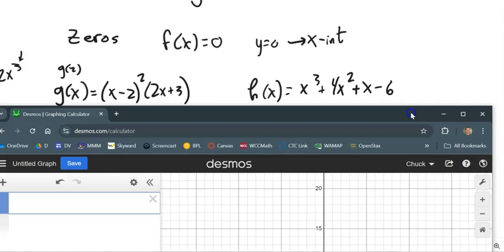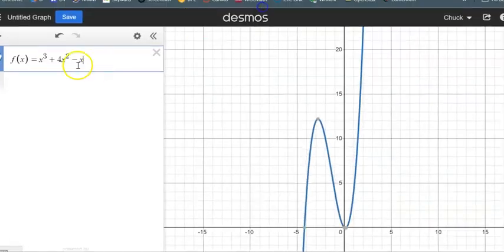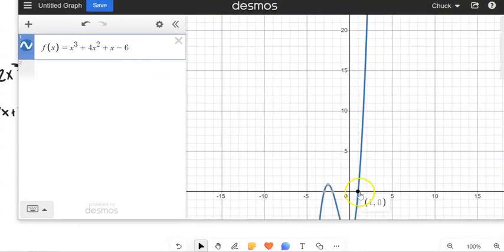So one, four, one, and six. Looks like I've got one at one and I've got one at negative two and one at negative three.